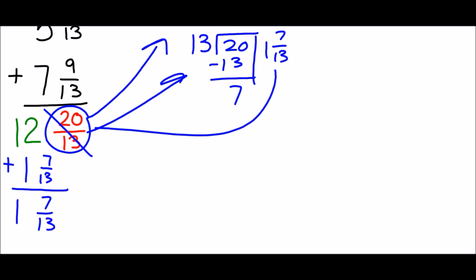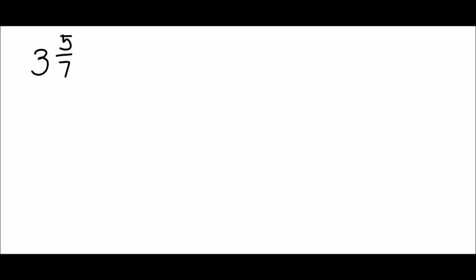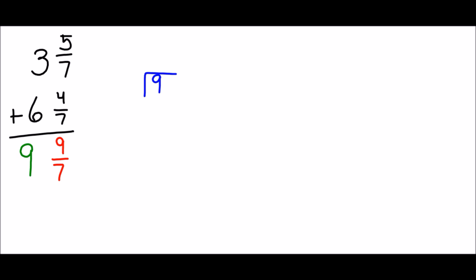Twelve plus one is thirteen — that's how you regroup the improper fraction. The last example we're going to do today is three and five-sevenths plus six and four-sevenths. Step one, as always: add the fractions. Five-sevenths plus four-sevenths is nine-sevenths. Then add the whole numbers: three plus six is nine.